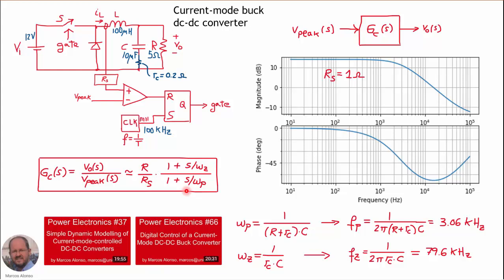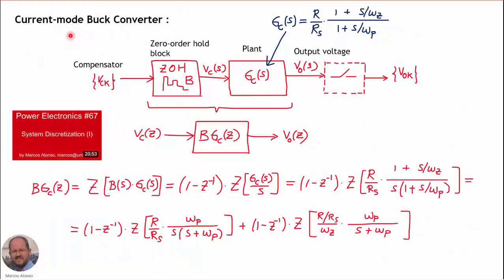Today we are going to see how to discretize this transfer function so we can use it in the implementation of a digitally controlled DC-DC converter. We start with the discrete signal generated by the digital compensator in the microprocessor. We have a zero order hold block with gain B, whose output goes into our plant — the current mode buck converter — giving us the output voltage.